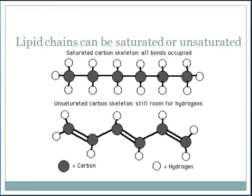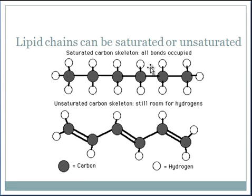You may have also heard of saturated and unsaturated fats. Saturated fats are saturated with hydrogens, which means there are no double bonds between the carbons. If it is saturated, it will be a solid at room temperature, like lard or butter. If it is unsaturated, it will be a liquid at room temperature, like oils.